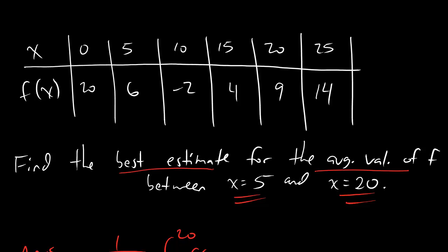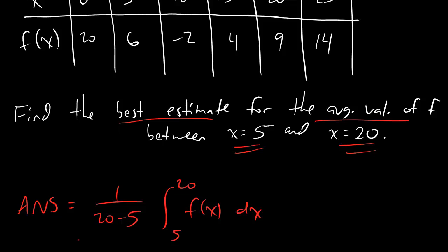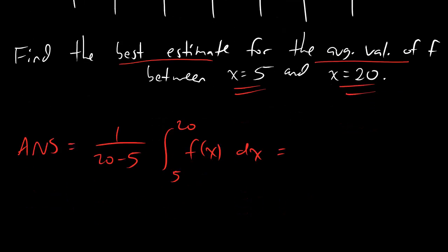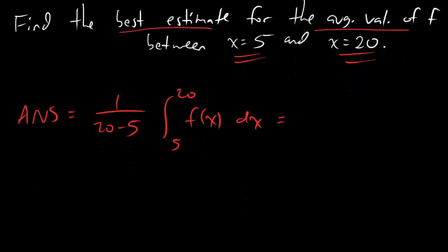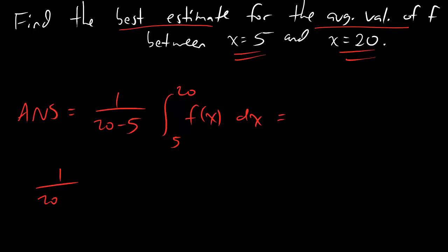if I'm trying to find the best estimate for an integral formula, like this puppy right here, if I'm trying to estimate that dude and all I have is a table, then that's going to be left-hand sum, right-hand sum, average those guys together. So, here's the answer you should be getting. We're going to do 1 over 20 minus 5 times left-hand sum plus right-hand sum, all divided by 2.